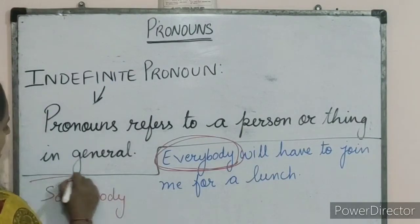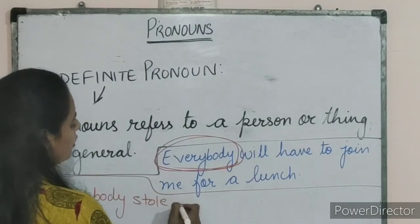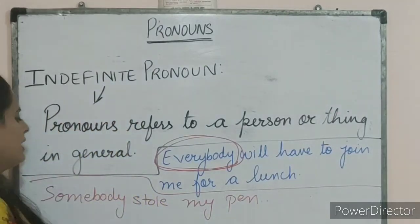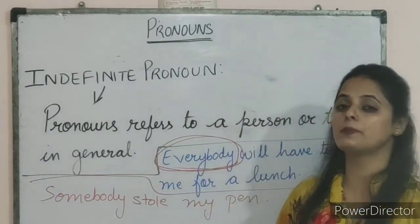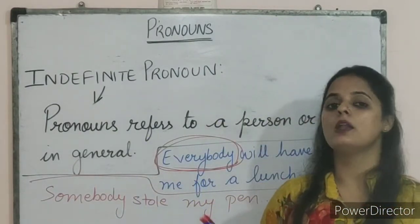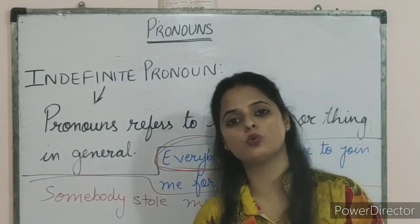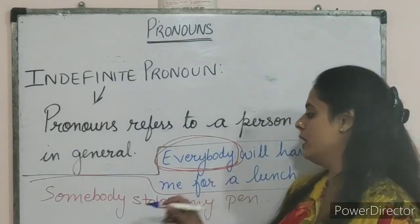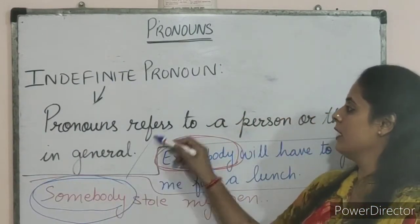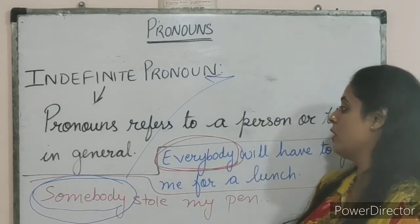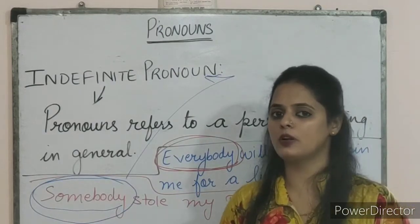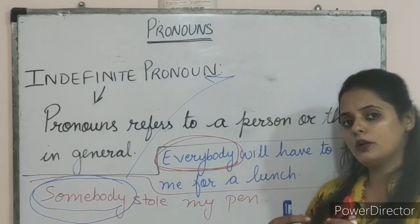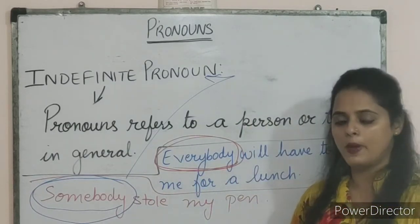Another example: 'somebody stole my pen.' Now here, somebody stole my pen. There is somebody, but I am not taking the specific name of who exactly stole my pen. Neither am I sure nor do I know the name of who exactly has stolen my pen, but I have an idea that there is somebody who has stolen my pen. This word 'somebody' is an indefinite pronoun because it is referring to a person in general — I am not specifically telling or dictating the name of who exactly stole my pen.